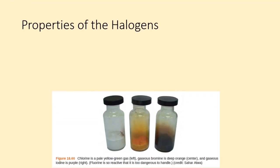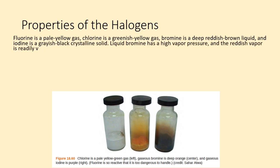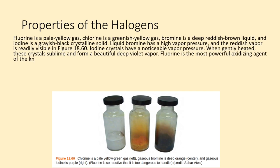Properties of the halogens: fluorine is a pale yellow gas, chlorine is a greenish-yellow gas, bromine is a deep reddish-brown liquid, and iodine is a grayish-black crystalline solid. Liquid bromine has a high vapor pressure, and the reddish vapor is readily visible in figure 18.60. Iodine crystals have a noticeable vapor pressure — when gently heated, these crystals sublime and form a beautiful deep violet vapor.